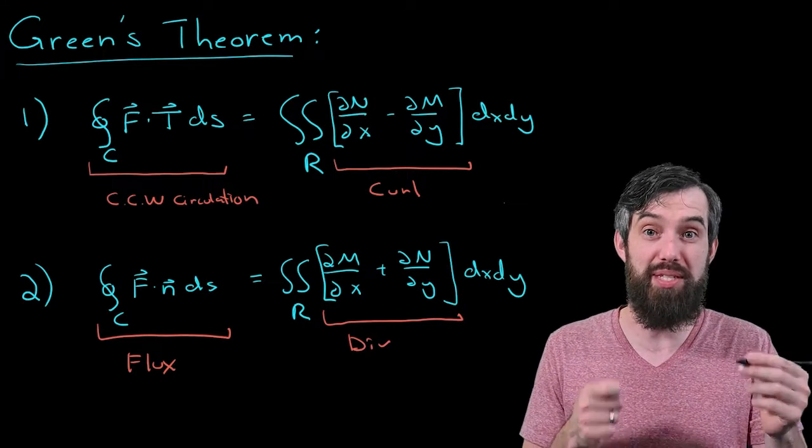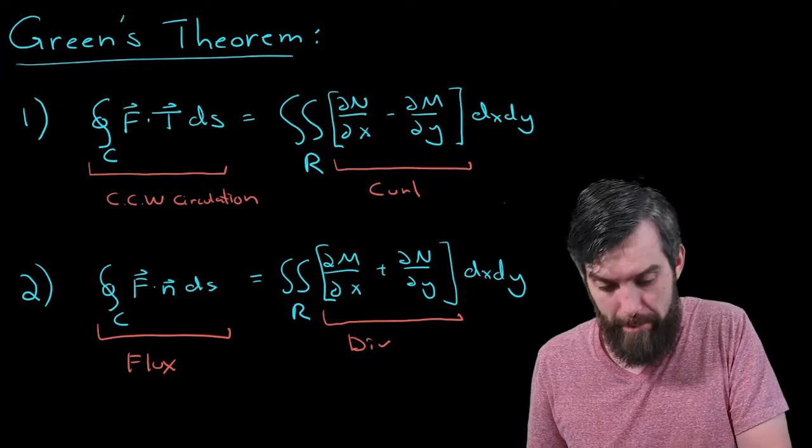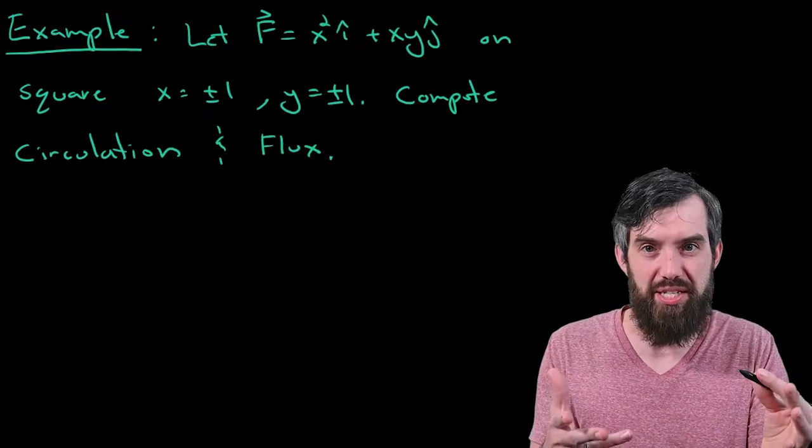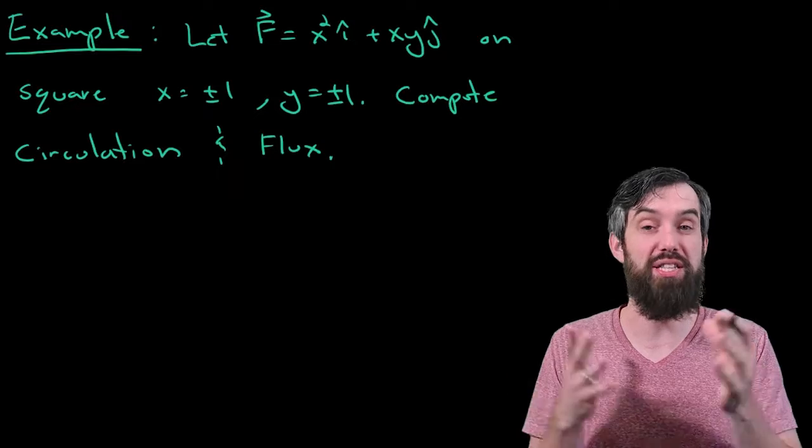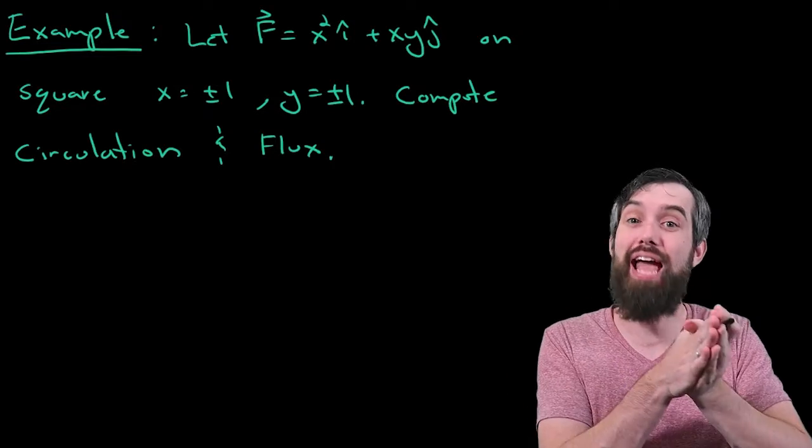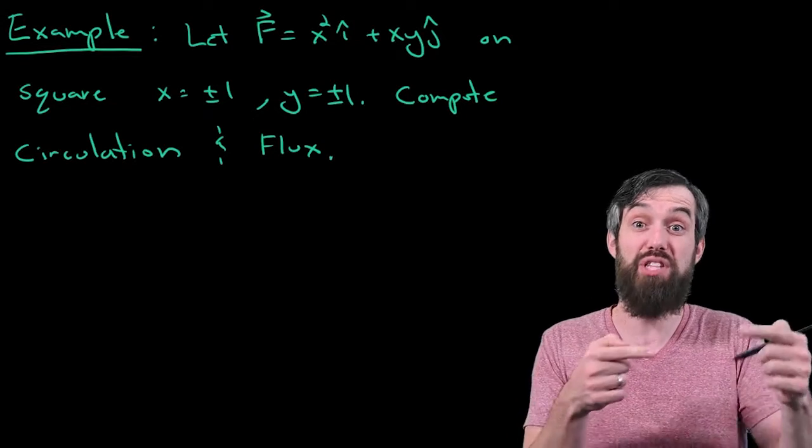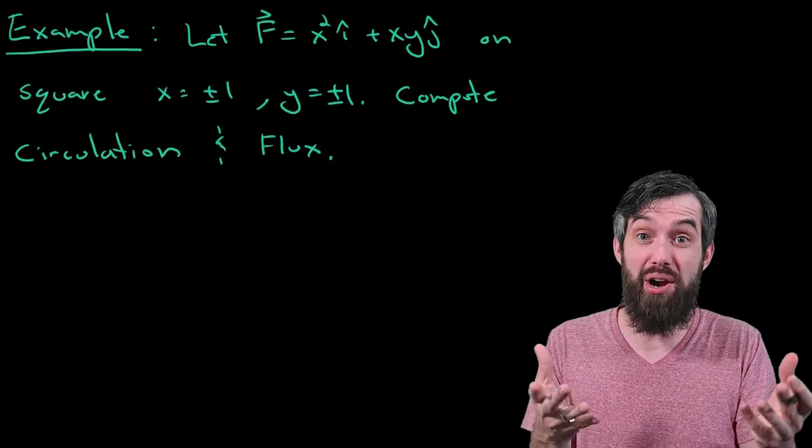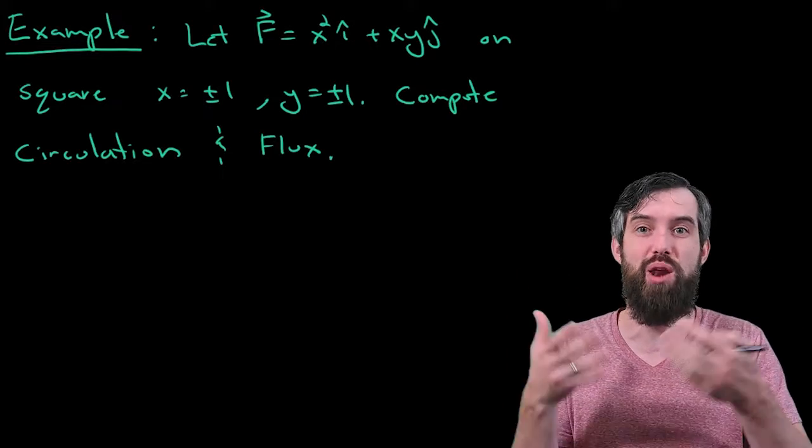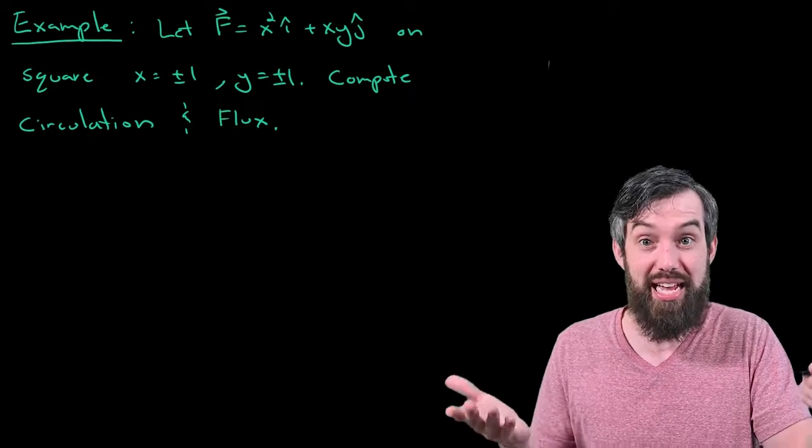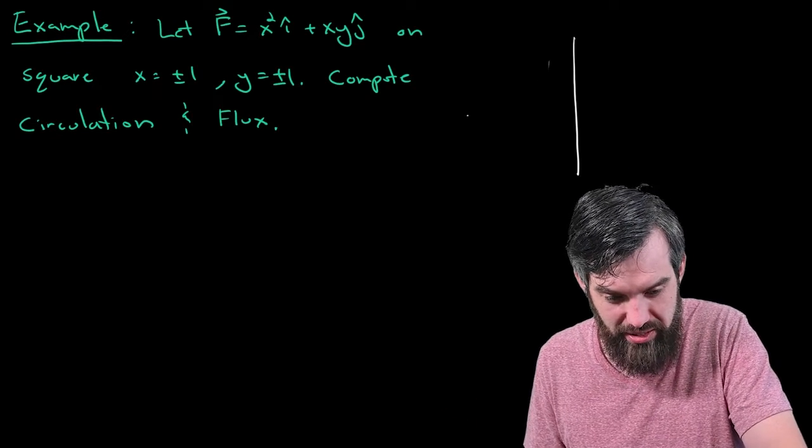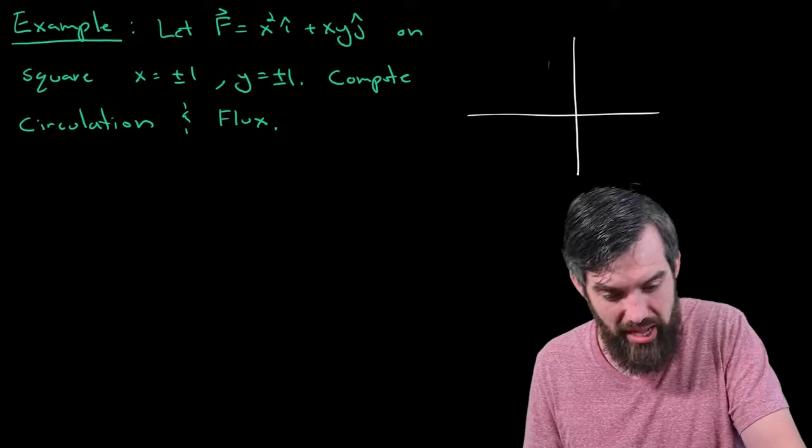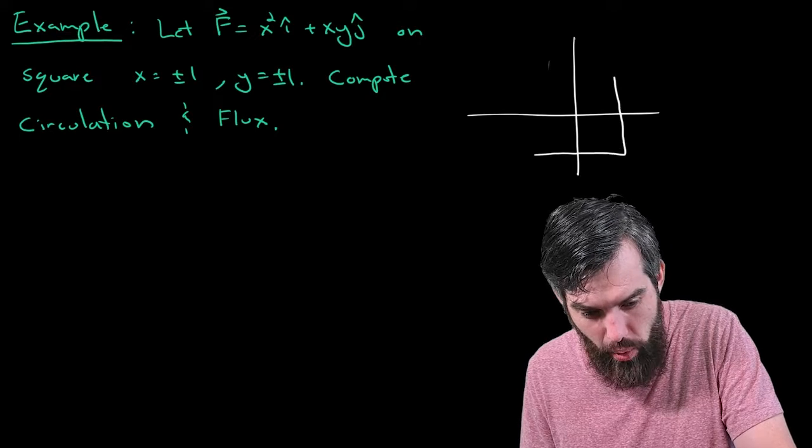So with those two theorems stated, let's just dive into the example. So the example reads, I have some vector field, it's the vector field x squared in the i-hat and xy in the j-hat. And then I have some curve, which is the square whose boundaries are x at plus or minus 1 and y at plus or minus 1. So I can sketch what the region is going to look like over here if this is the x and y-axis, then I am talking about the square here.